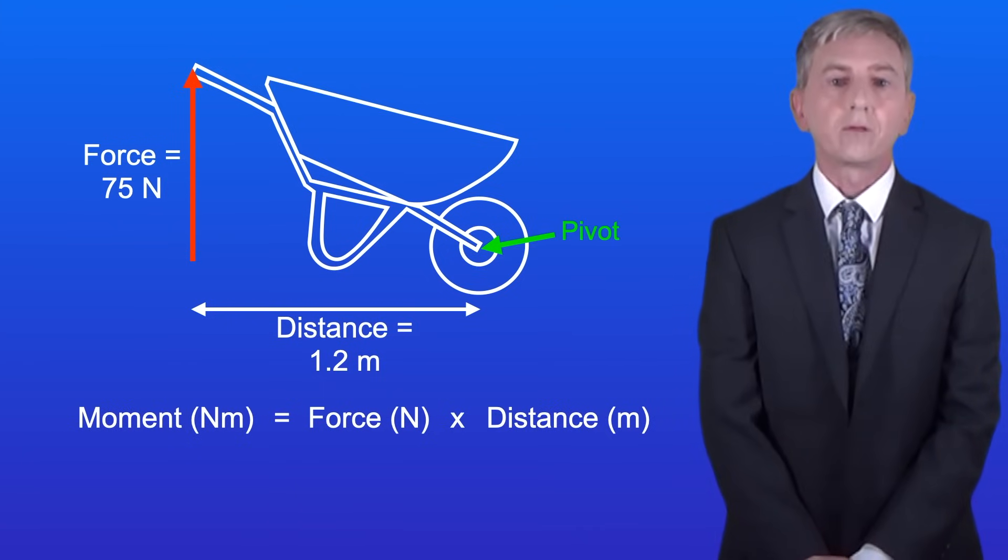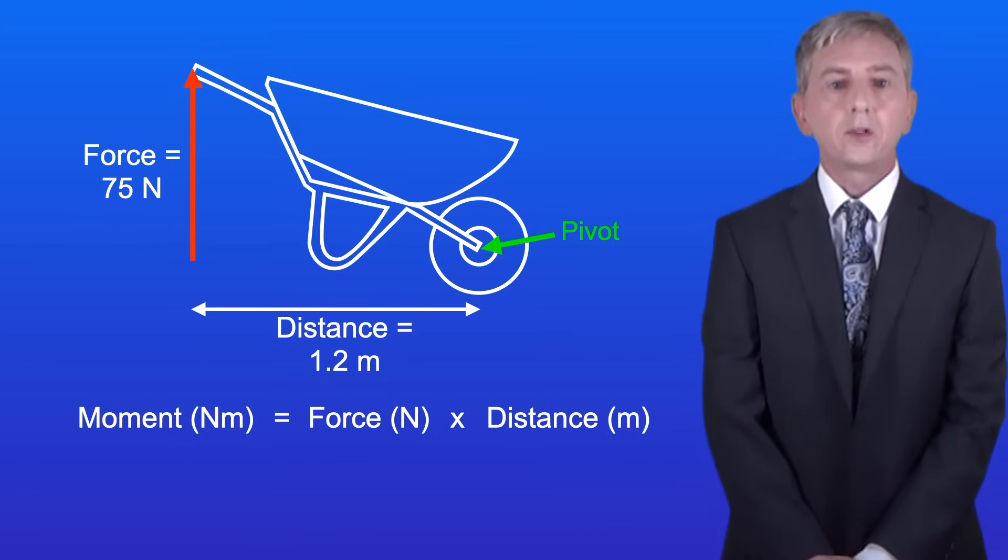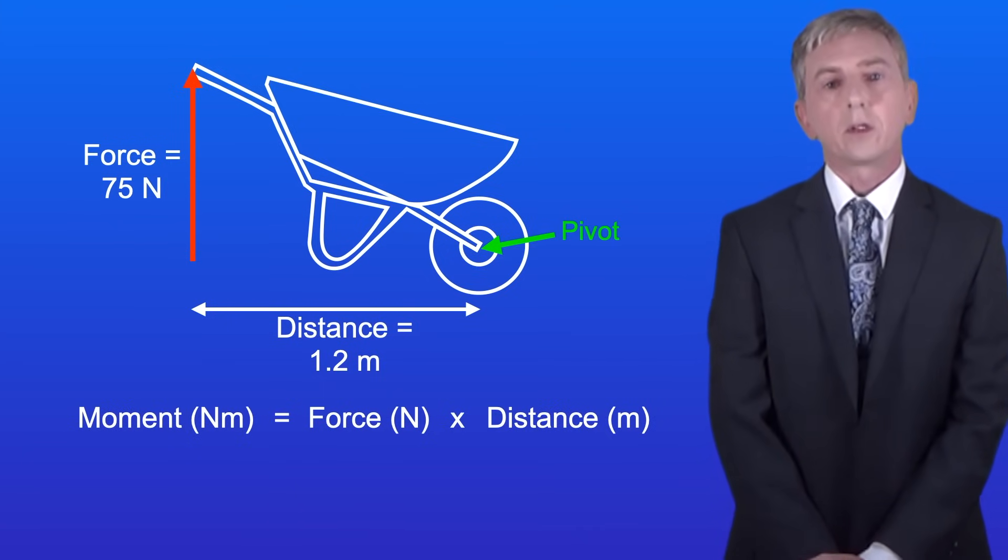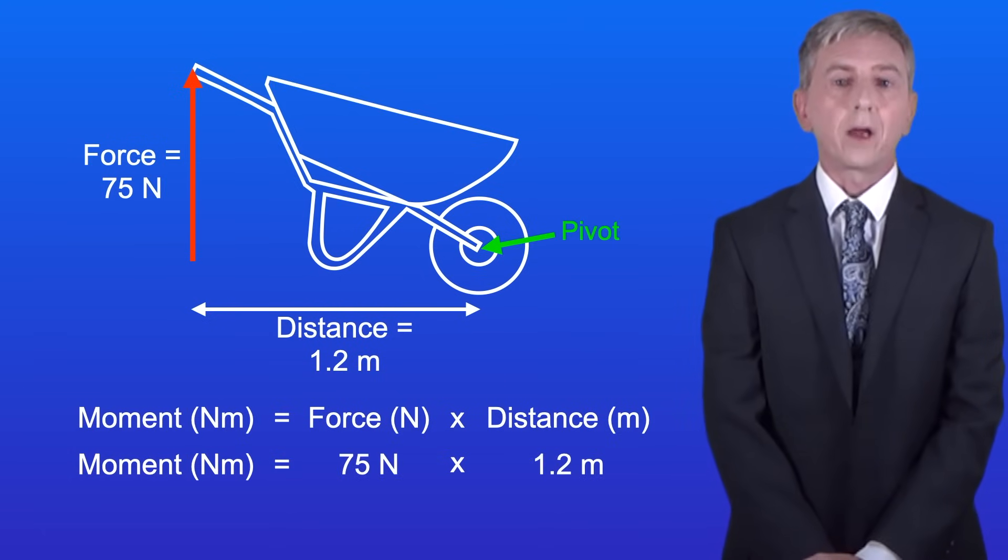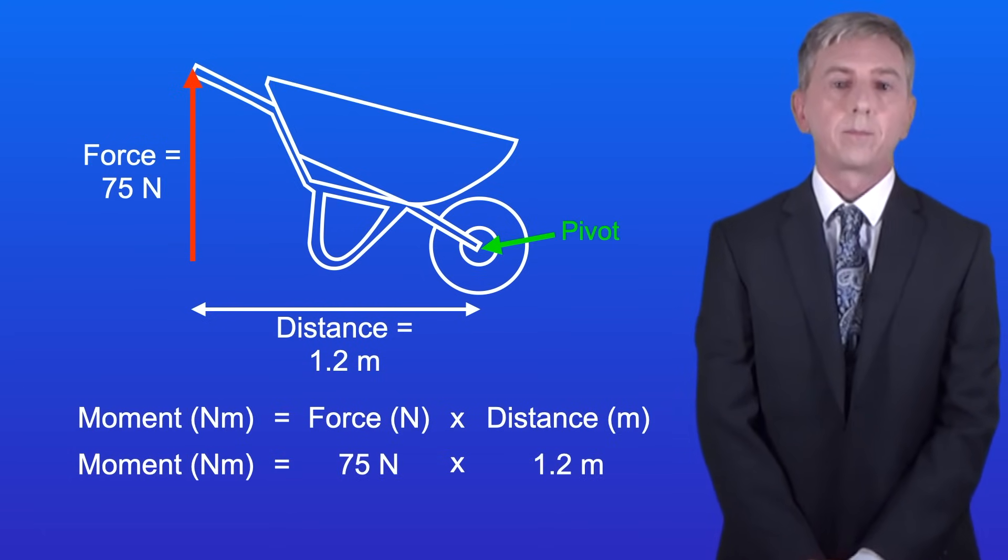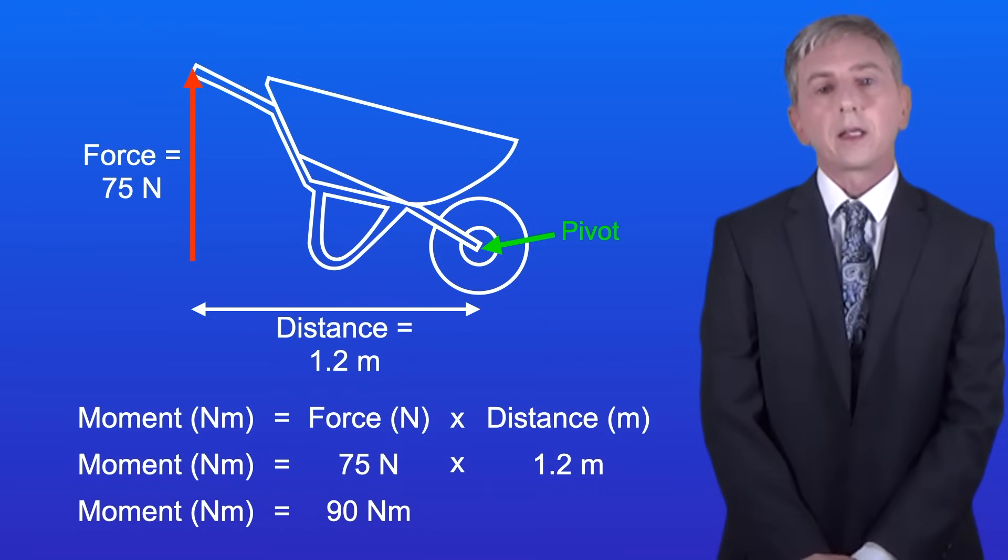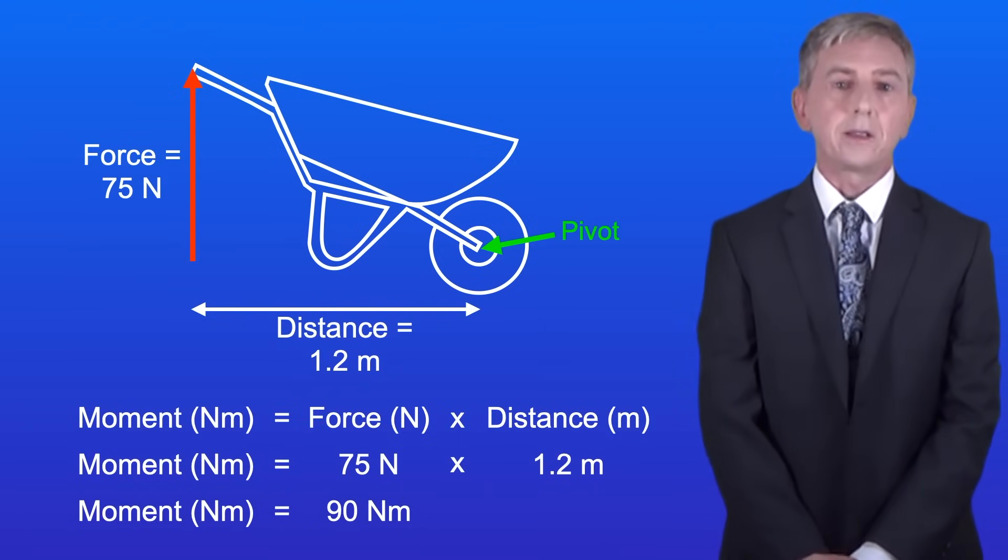Okay here's the equation for moment. Moment in newton meters equals force in newtons multiplied by distance in meters. We've got a force of 75 newtons and a distance of 1.2 meters. Multiplying these together gives us a moment of 90 newton meters.